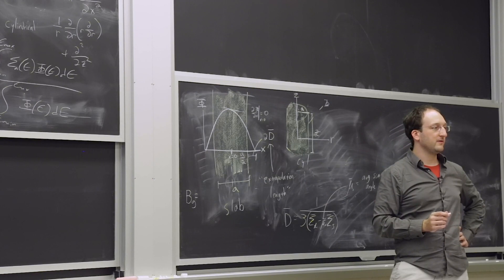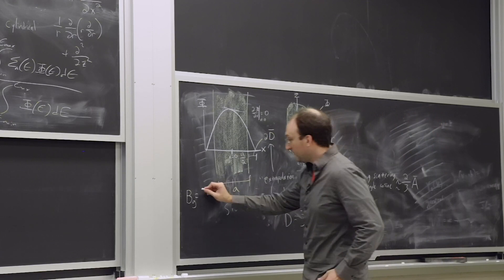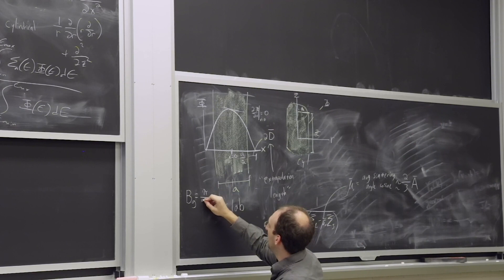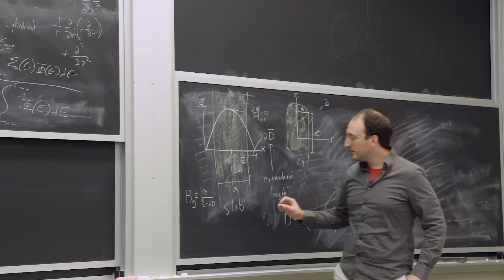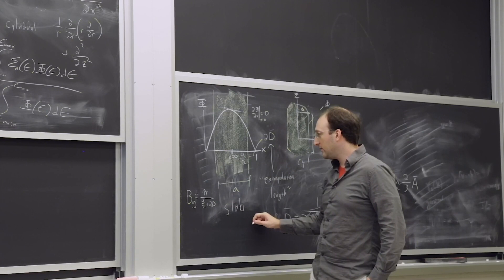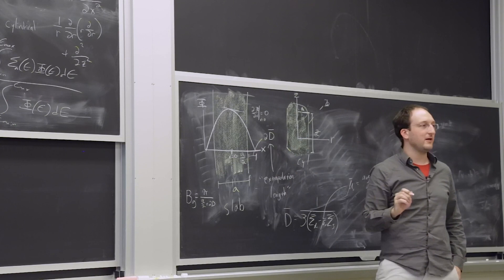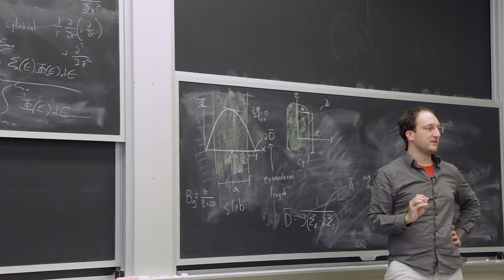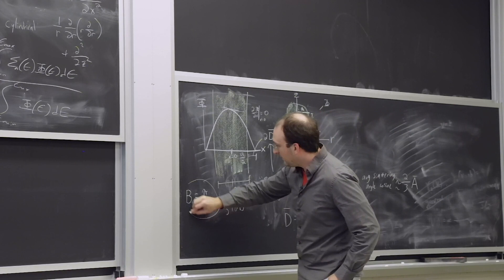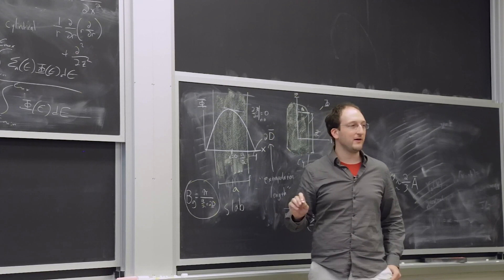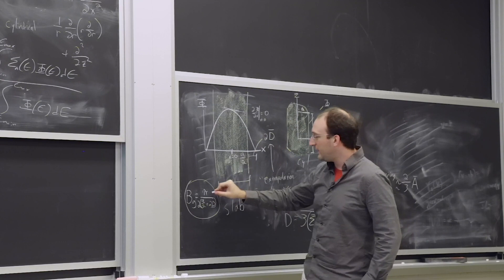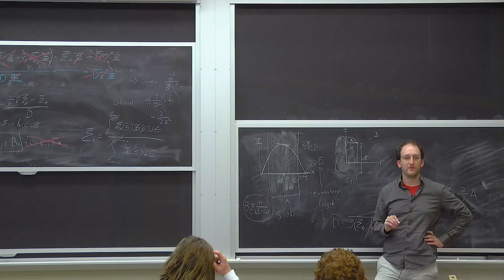This is what we call the extrapolation length. I should also mention, I'm not going to derive it, because I think we've done enough deriving for one week, but I'll just give you the form. This diffusion constant can actually be expressed in terms of other cross-sections, where this mu naught is what's known as the average scattering angle cosine. And it approximately equals 2 thirds times the average atomic mass of whatever it's scattering off of.